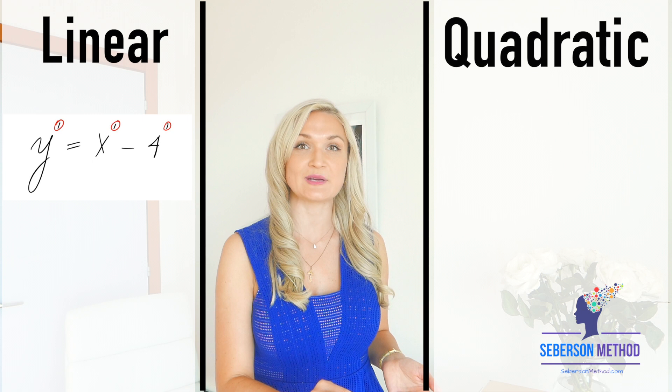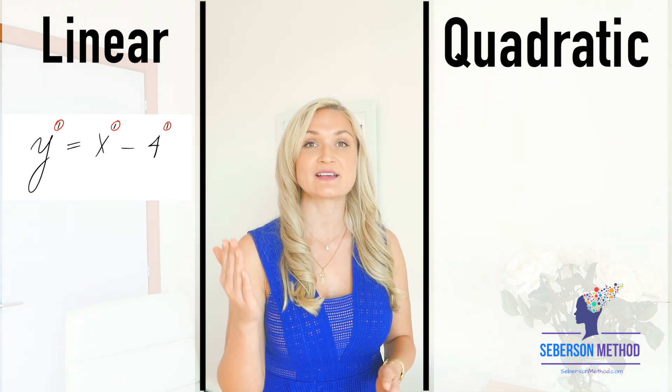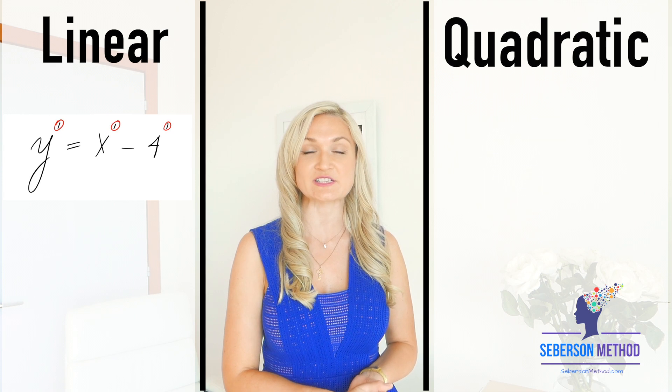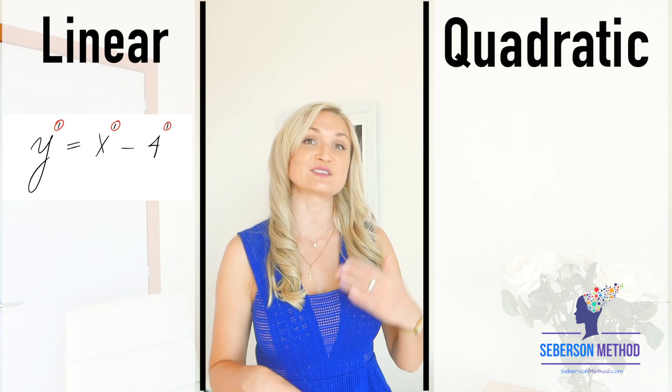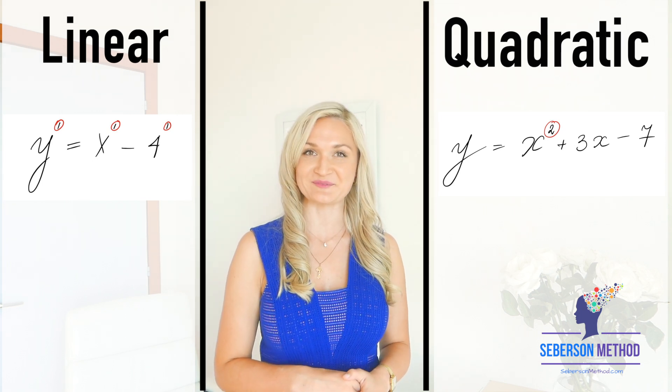If you're seeing an equation that when you foil everything, there are no exponents, this is going to be a regular linear equation. And when you have an exponent that equals to two, you are dealing with a quadratic. I hope this helps.